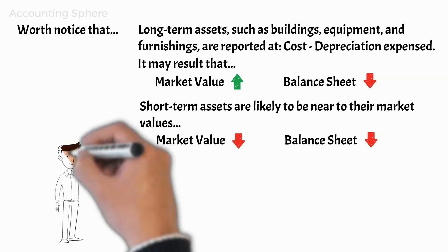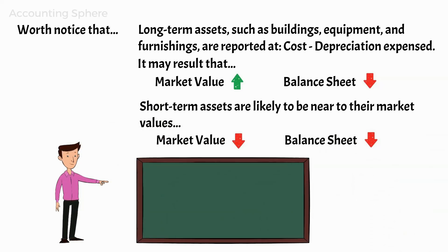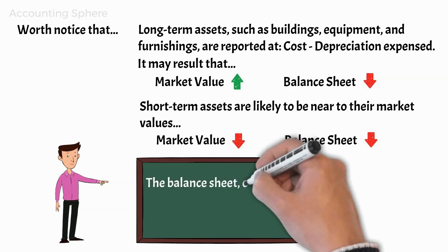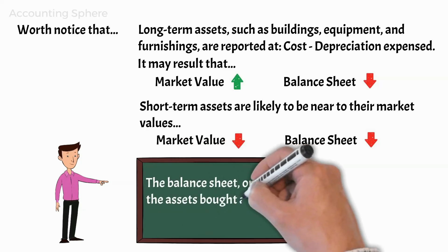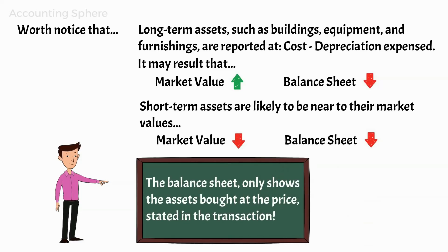John realizes an important learning to keep in mind the next time he reads a balance sheet: the balance sheet only shows assets bought at the price stated in the transaction. Let me know in the comments below if you now understand how depreciation may differ from the real market value of equipment and buildings.